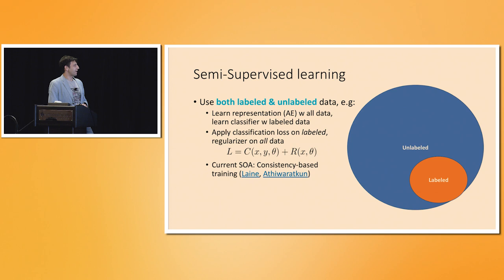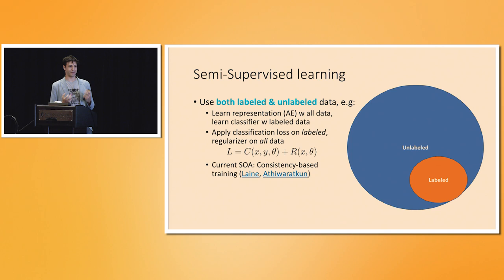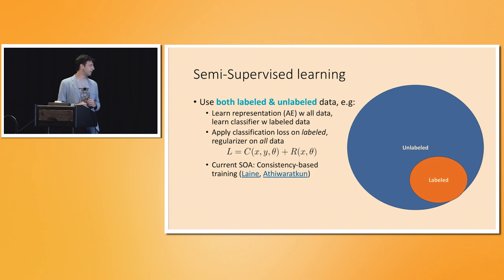In terms of semi-supervised learning with deep learning, there are several approaches. One common approach is to use the full set including unlabeled data to learn representations — say by training an autoencoder — and then using that representation learned from all data to train a classifier on just the labeled subset. This gives the advantage of operating in a lower-dimensional space.